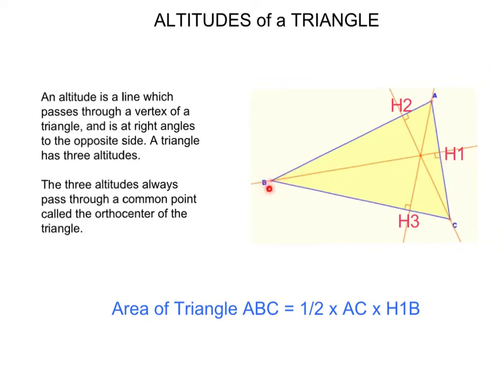In the case of B to H1, that's the altitude of B to the side AC and passes through the angle B and crosses the side AC at a right angle.